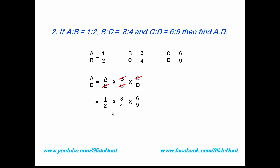And the remaining is A by D. Now put the value of these ratios. Now simplify it. Cancel this 2 with 6: 2 times 3 is 6. Now cancel this 3 with 9: 3 times 3 is 9. Now cancel this 3 with this 3. So we get 1 by 4. A by D equals 1 by 4. So we can write it as A is to D equals 1 is to 4.